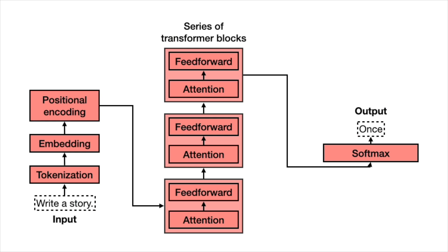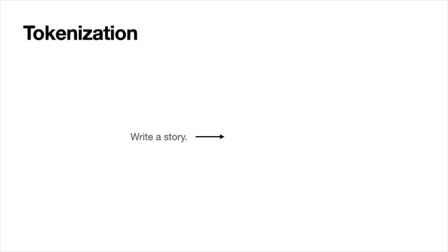In this video, I'm going to show you all of these pieces of the architecture, and you're going to see that they're actually pretty simple. On the bottom left, you see the input, which is 'write a story,' and on the right, you see the output, which is 'once.' Let's first look at tokenization. This one simply takes the words and turns them into pre-existing tokens — there is a token for every word and also for every punctuation sign. This is just a pre-processing step.